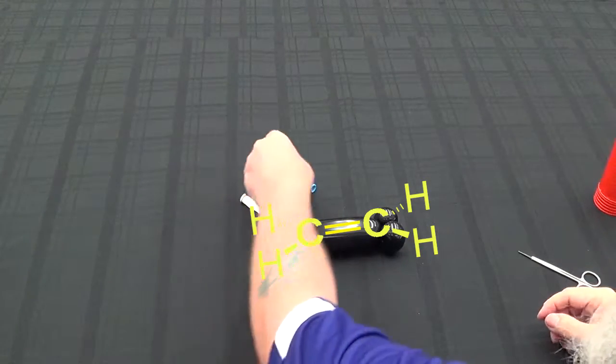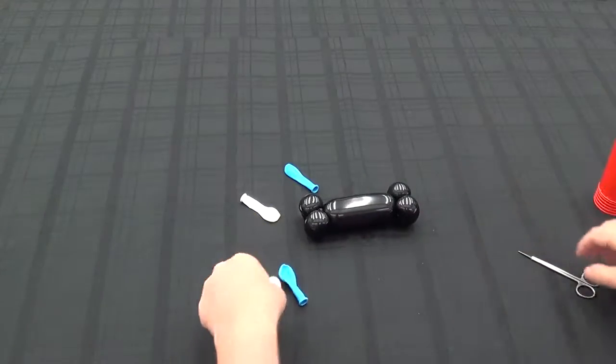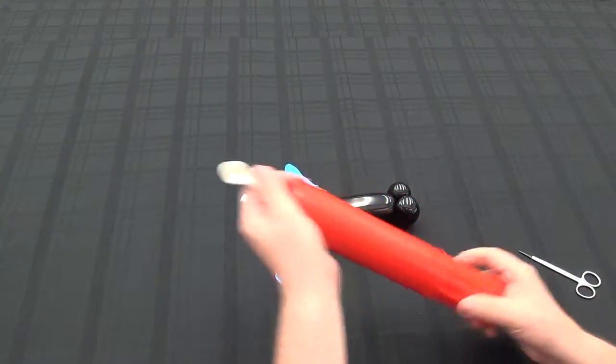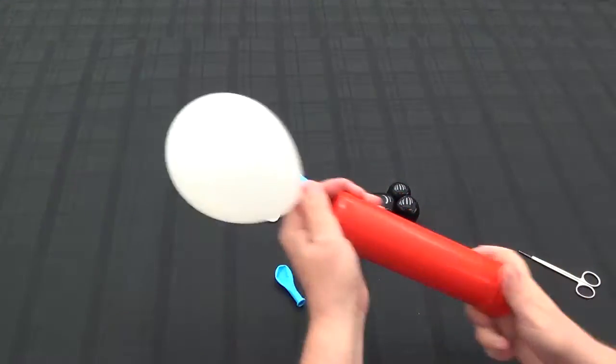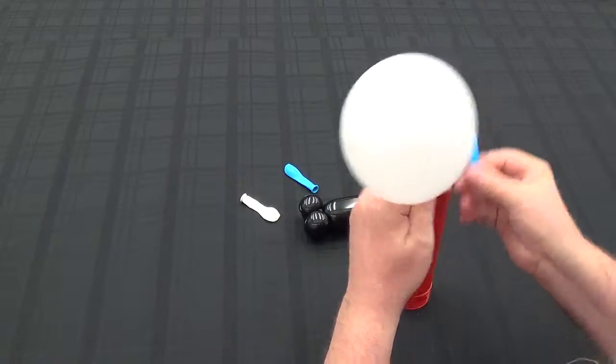Now, I'm taking one of each color, which represents the signs of the lobes of the orbitals. We'll inflate each of those with three pumps.